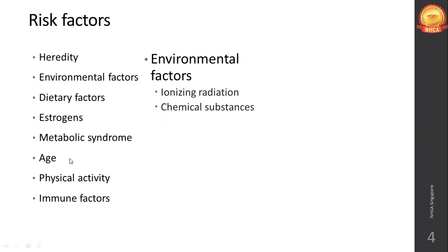Chemical substances like tobacco, benzene, asbestos, and nicotine - used in substance abuse like smoking and alcoholism - are associated with cancer. Usually, these lead to lung cancer and liver cancer.